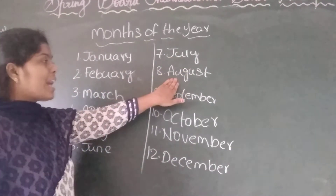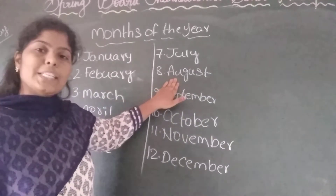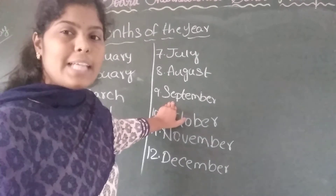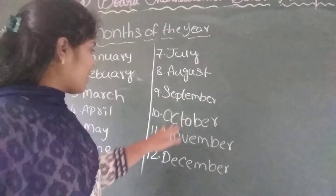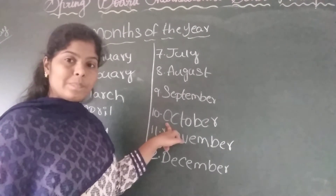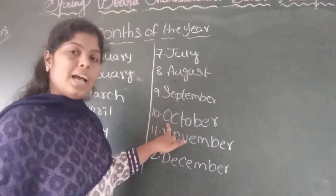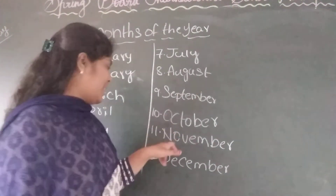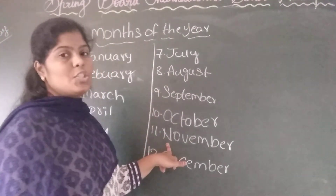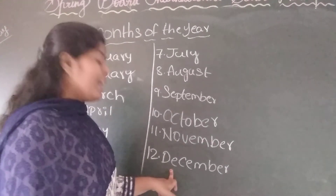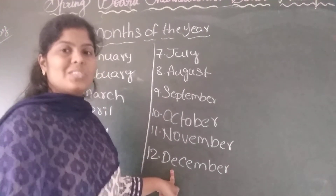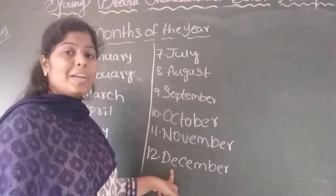August — we celebrate Independence Day. September — we all celebrate Teacher's Day. October — we all celebrate Dussehra and Diwali. November — we all celebrate Children's Day. December — we all celebrate Christmas.